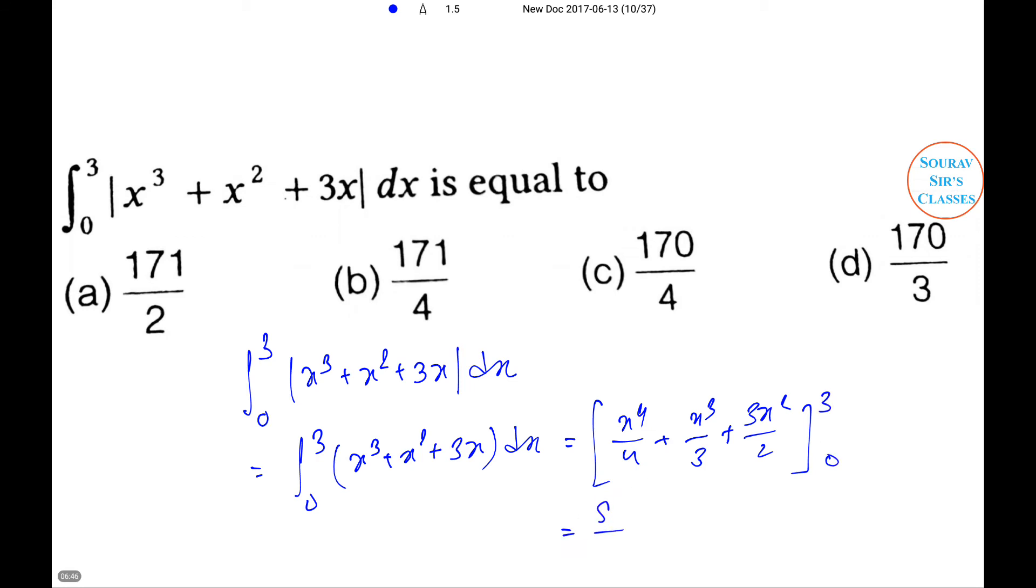So that equals 81 by 4 plus 27 by 3 plus 27 by 2, that equals 171 by 4. That means option B will be the right answer.